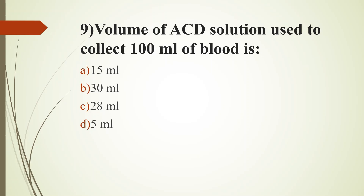Ninth question. Volume of ACD solution used to collect 100 ml of blood is: Option A, 15 ml; Option B, 30 ml; Option C, 28 ml; Option D, 5 ml. Answer is Option A, 15 ml. For a 450 ml total volume bag, the anticoagulant volume is 63 ml. For a 350 ml total volume bag, the anticoagulant volume is 49 ml.